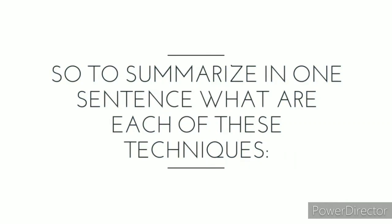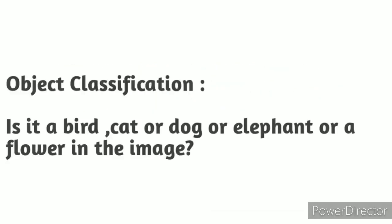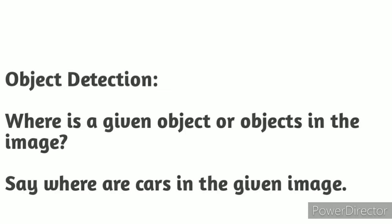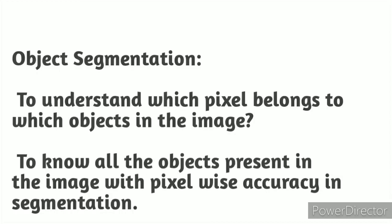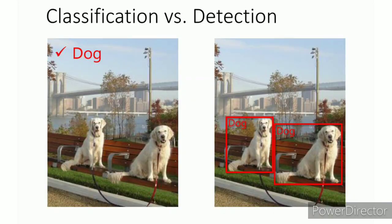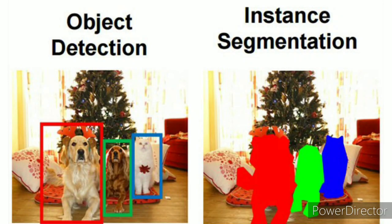To summarize each of these techniques in one sentence: Object classification asks what category of object is in this image — is it a bird, cat, dog, elephant, or flower? Object detection asks where a given object is in the image, such as where are the cars. Object segmentation identifies which pixel belongs to which object — knowing all objects present with pixel-wise accuracy. In computer vision we start from classification, which is a much easier task than segmentation. In segmentation we classify many different objects in a given image and identify their boundaries with pixel-wise accuracy. Thank you.